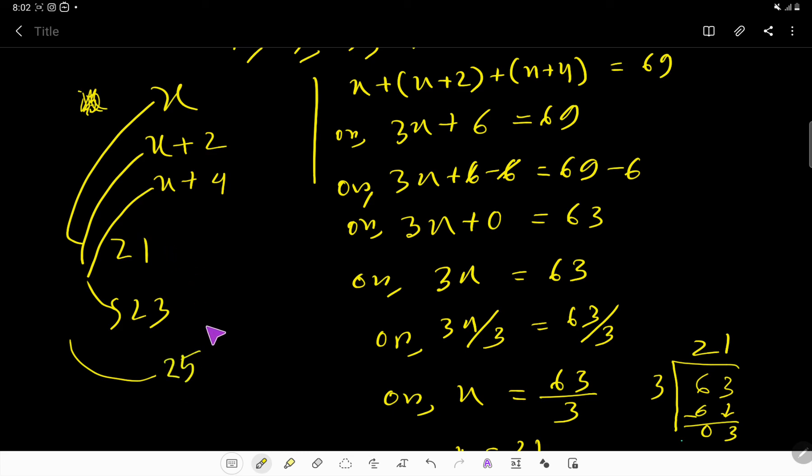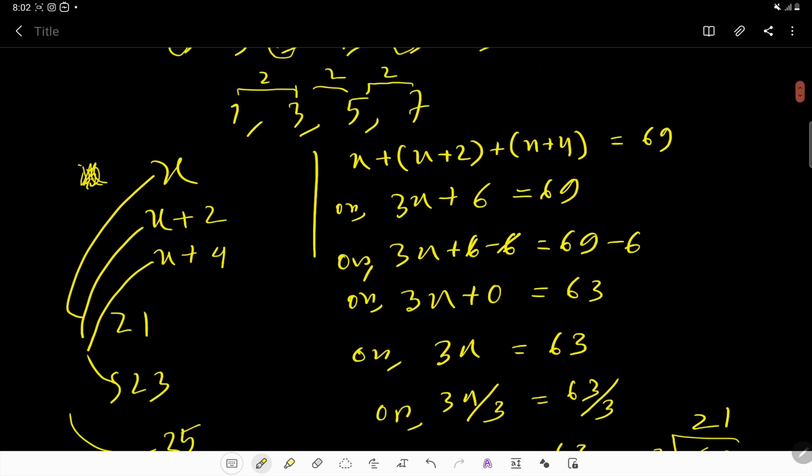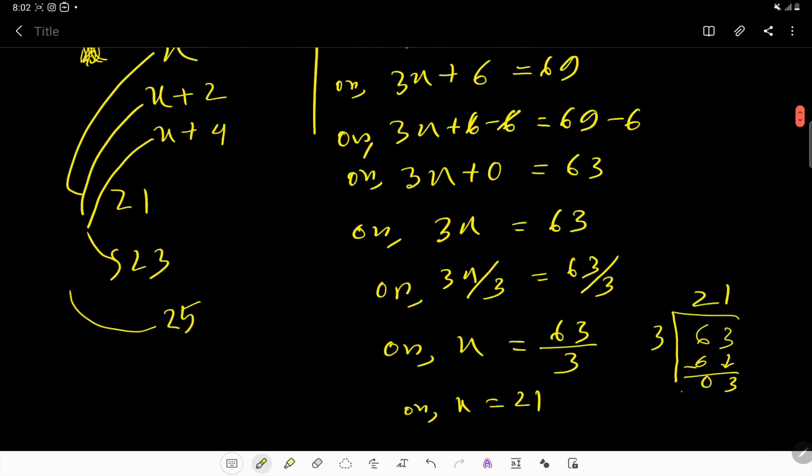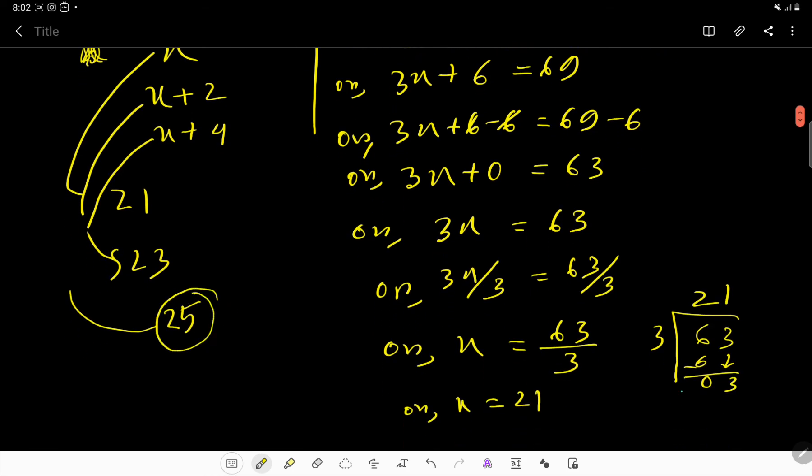That's 25. So these are the 3 numbers: 21, 23, 25. If you add these 3 numbers, you will get 69. So the third number - what is the third number in this sequence? The third number is 25.